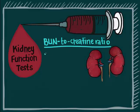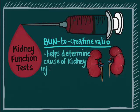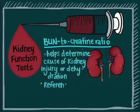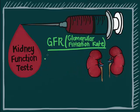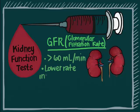The BUN to creatinine ratio may be used to determine the cause of kidney injury or dehydration; the reference ratio is 8 to 19. GFR (glomerular filtration rate) has a desired level greater than 60 milliliters per minute. A lower rate indicates kidney disease, and it is often used to determine kidney failure.